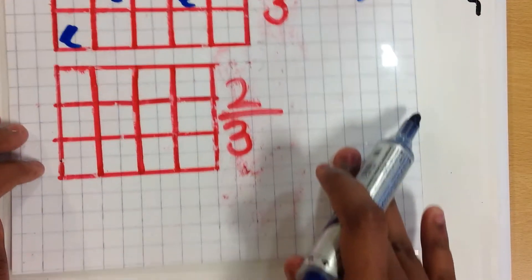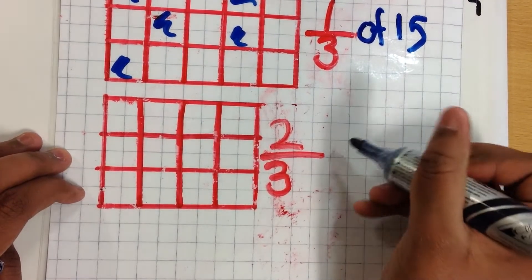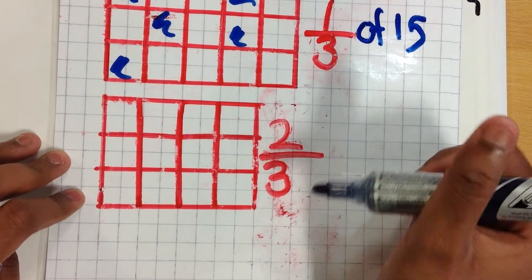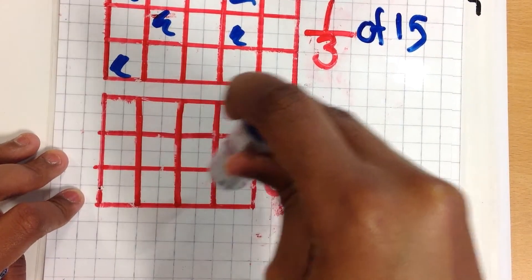So here's another one. You have to find out 2 thirds this time. So we have to count out how many there are again. 1, 2, 3, 4, 5, 6, 7, 8, 9, 10, 11, 12.